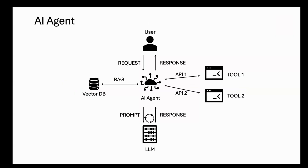Let's understand what this really means from a technical standpoint. Large language models are incredibly smart, but they struggle when they need information beyond what was used in their training data set. AI agents solve this problem by providing LLMs with the right context by accessing data from files, knowledge bases, or tools. They can even take actions like updating a document, sending an email, or sending an SMS based on that context. But for this, developers must write custom code for each data source or API.